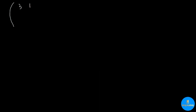Let's take a look at this matrix: 3, 4, 1, 2, 2, 3, negative 1, negative 4, 2. Because there is no zero in this matrix, I can pivot at any entry I want. So let's say I want to pivot at this particular 3.